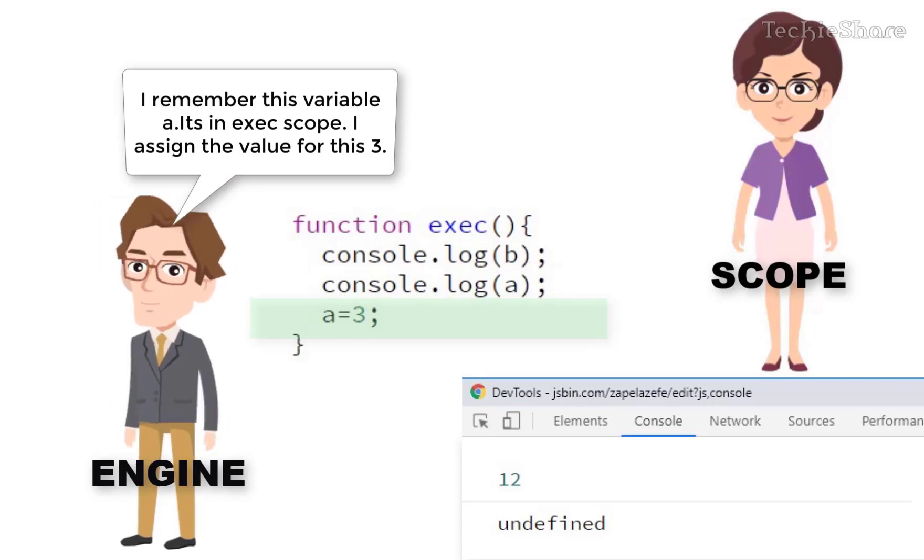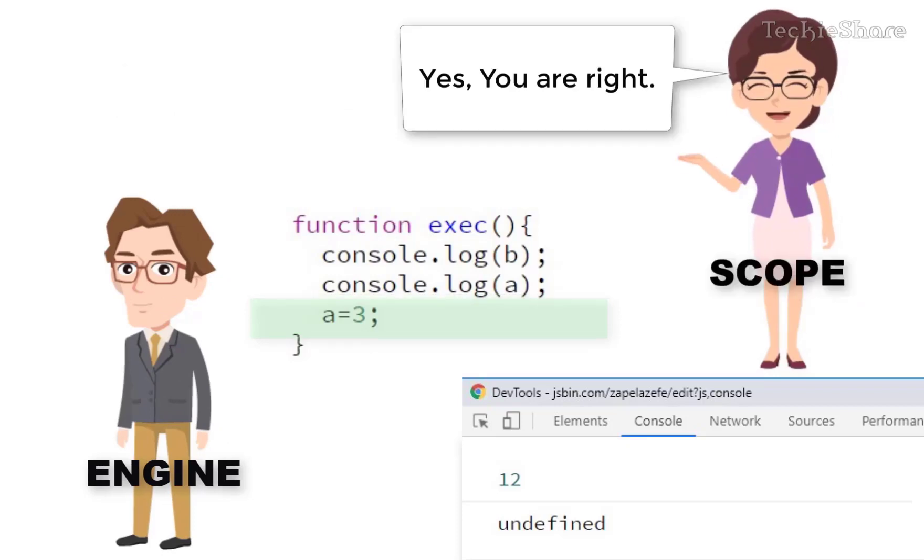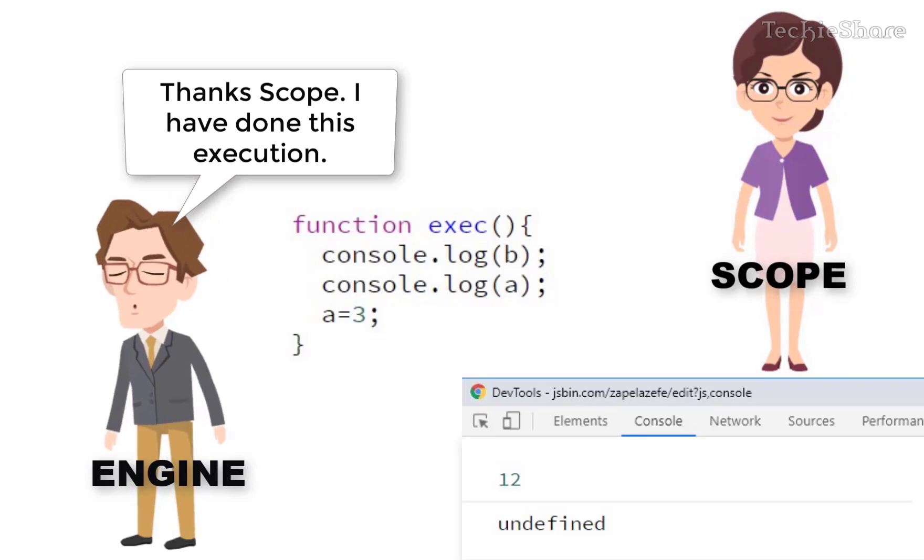I remember this variable A. It is in the function scope, right? I have to assign the value 3. Yes. You are right. Thanks Scope. I have done this execution.